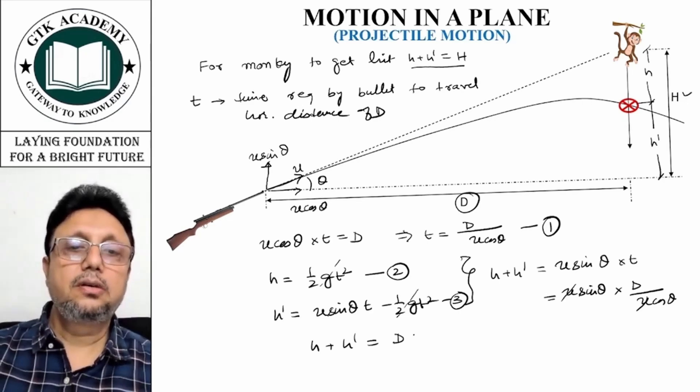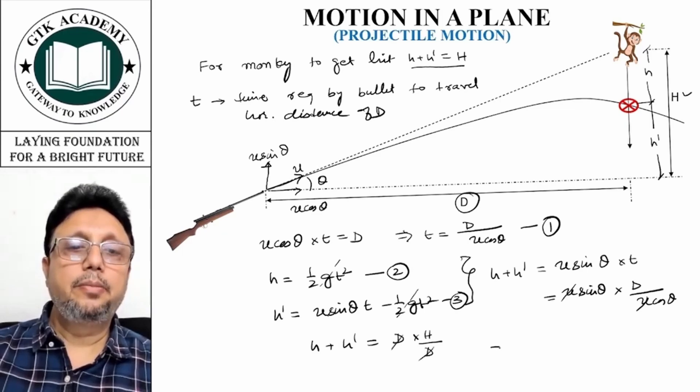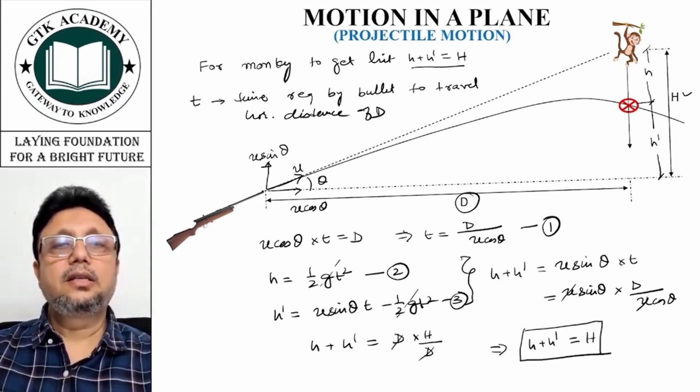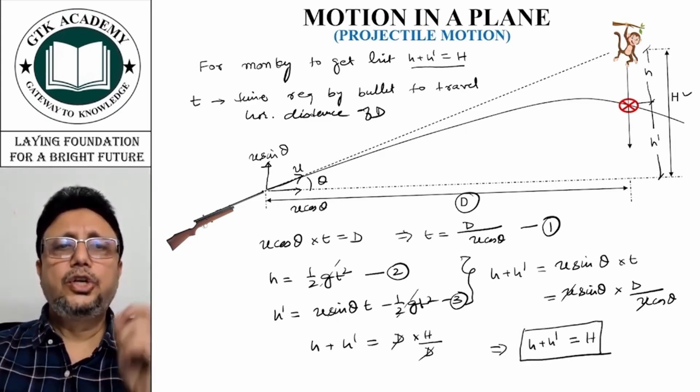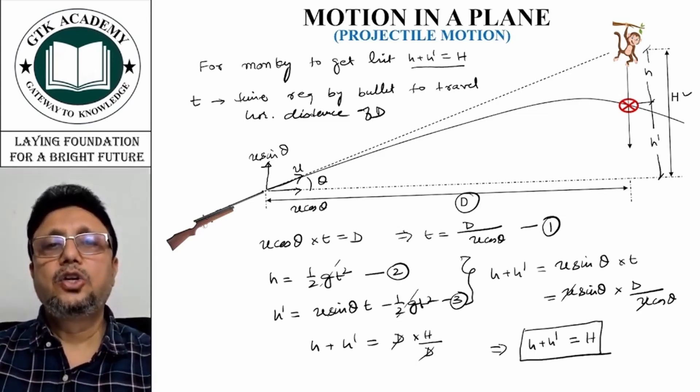Now what is tan theta? It is capital H upon d. So that means h plus h dash is equal to H. This indicates that the monkey will surely get hit by the shot.